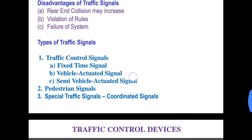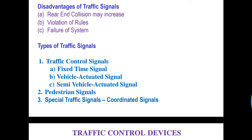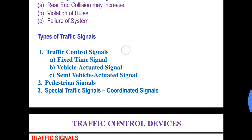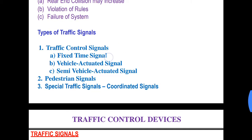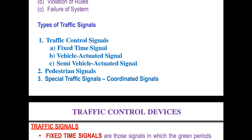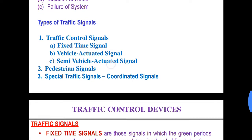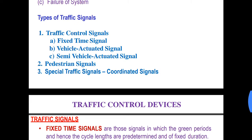Now, what are the different types of traffic signals? Traffic control signals include fixed time signals, vehicle actuated signals, and semi vehicle actuated signals. Then there are pedestrian signals, special traffic signals, and coordinated signals.